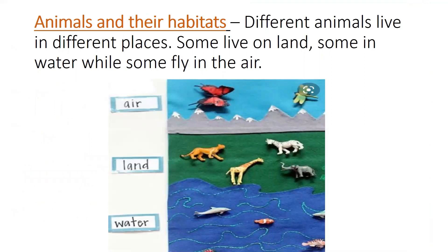Children, a habitat is the natural and suitable environment where living organisms like plants, animals, and humans survive. Different animals live in different places. Some animals like dog, goat, lion, and elephant live on land. Some animals like fish, seahorse, octopus, and turtle live in water. Some animals like monkey and squirrel live on trees, while some fly in the air.